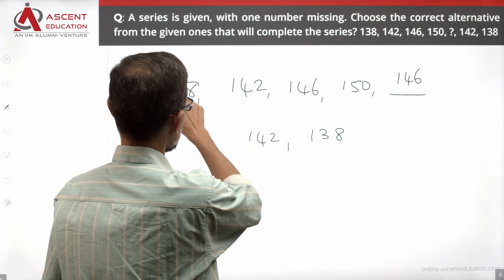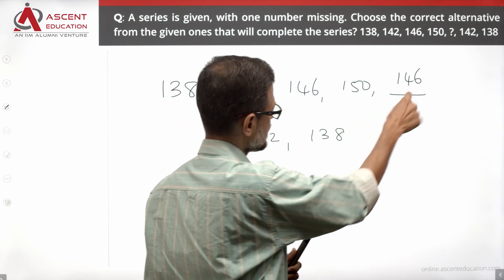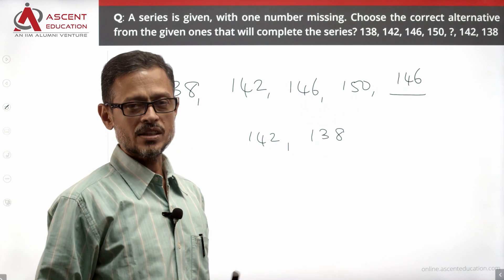Let's check whether it makes sense. Add 4, add 4, add 4 to reach 150. Then subtract 4 to get 146, subtract 4 to get 142, subtract 4 to get 138. So the correct answer is 146.